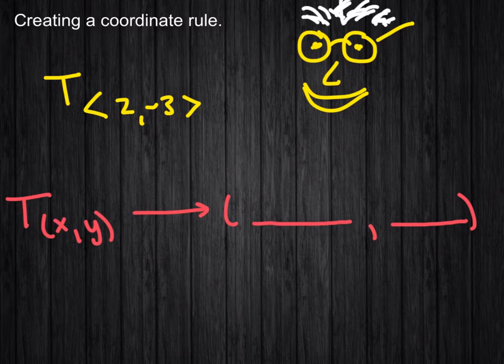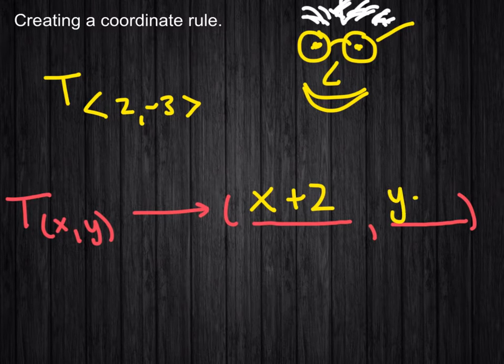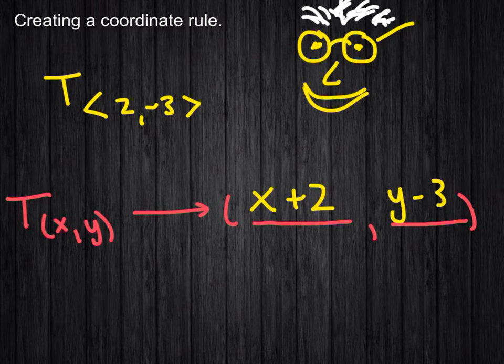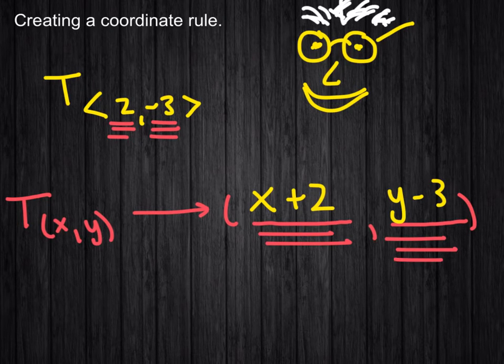And it's an easy conversion. It's simply to convert it into a description of what to do with x and what to do with y. So the vector of 2 here means to add 2 to the x, and this negative 3 here means to subtract 3 from the y.